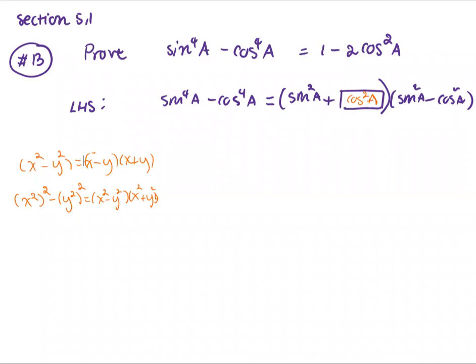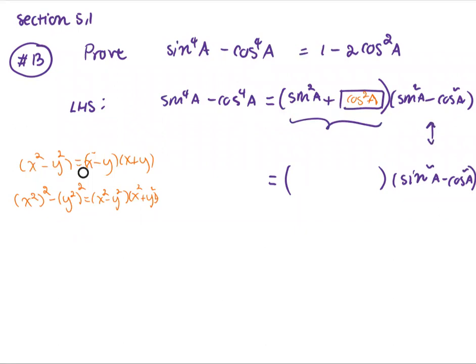After that, we move to the next step. The next step provides the missing part, multiplied by sin²A minus cos²A. The first factor is sin²A plus cos²A, which by the Pythagorean Identity equals 1. So we place 1 into the missing part.